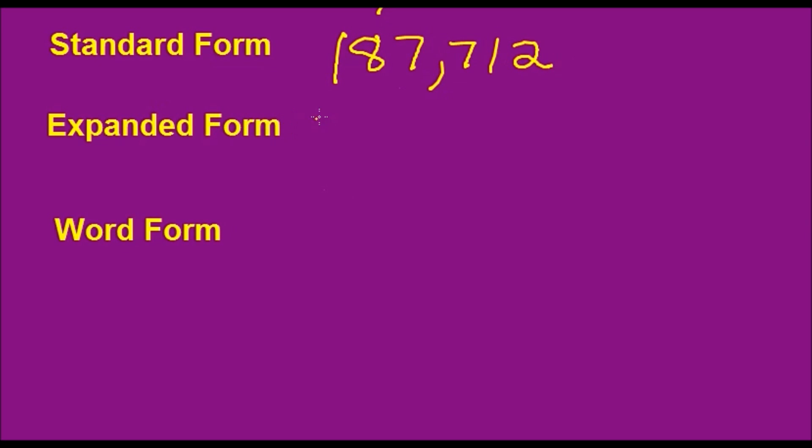Expanded form, you have to remember the place values. This one is really worth 100,000. I'd like to add that to my bank account. The seven here, this first seven in the thousands period is worth 7,000. And this seven here is worth 700. The one is worth 10. And lastly, the two is just worth two. So that is 187,712 in expanded form.